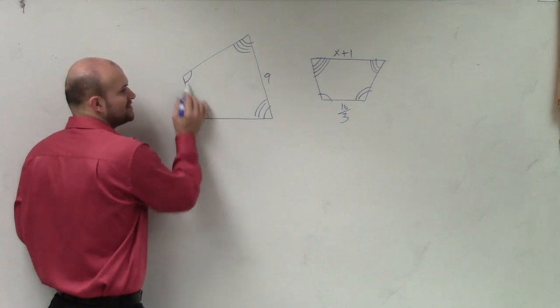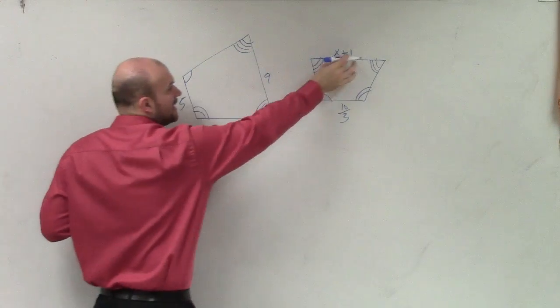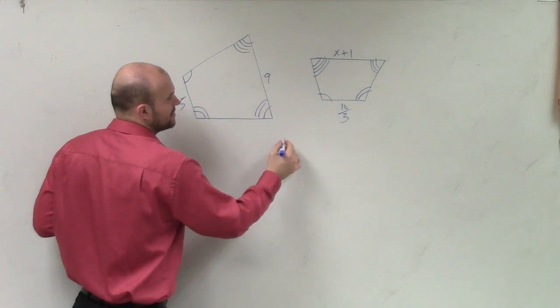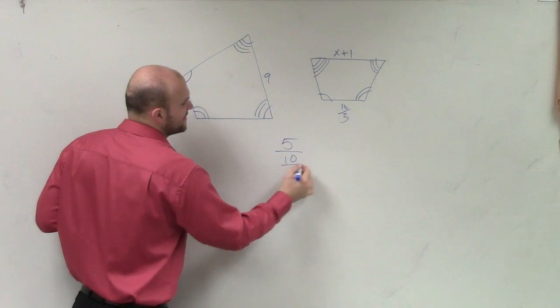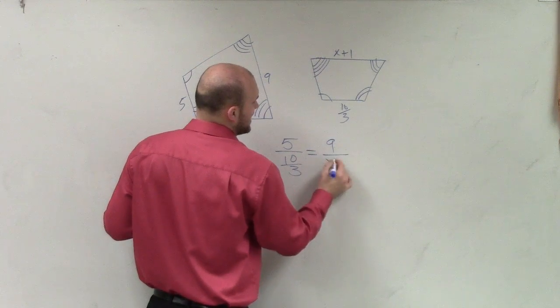We can see that between these two sides that these two are corresponding sides, and these two are corresponding sides. So I need to set up a ratio. So I can say 5 is to 10 over 13, which is equal to 9 over x plus 1.